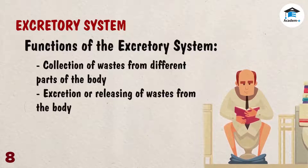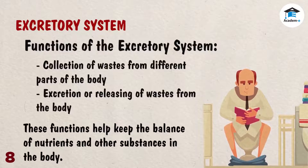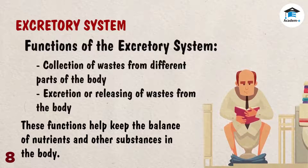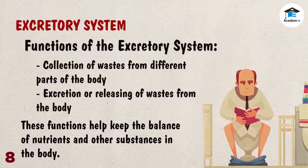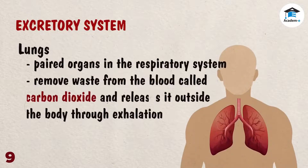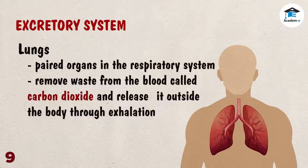Collection and excretion of wastes from the body are the main functions of the excretory system. These functions help keep the balance of nutrients and other substances in the body. The organs of the excretory system include the lungs — a paired organ in the respiratory system that removes waste from the blood called carbon dioxide and releases it outside the body through exhalation.